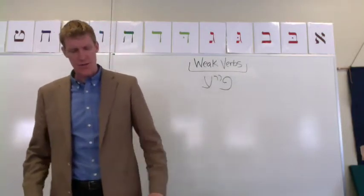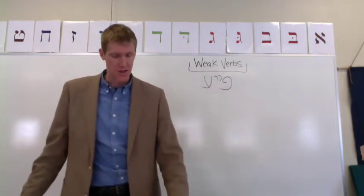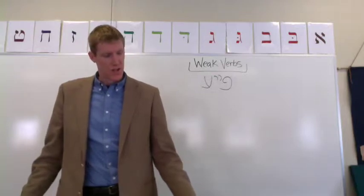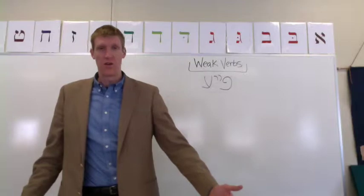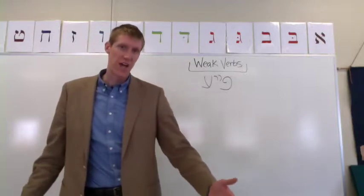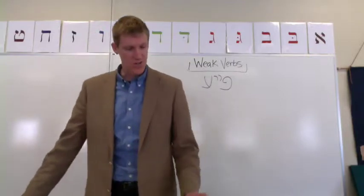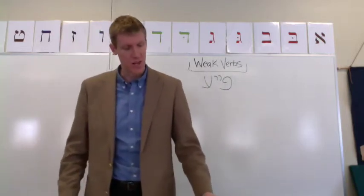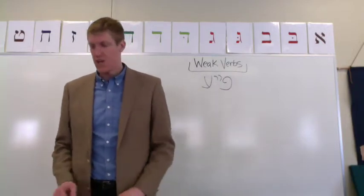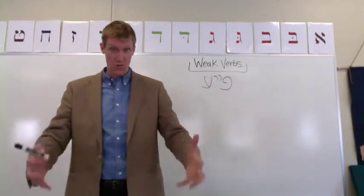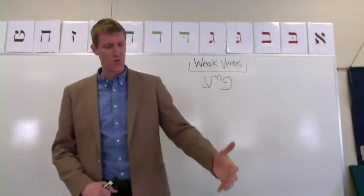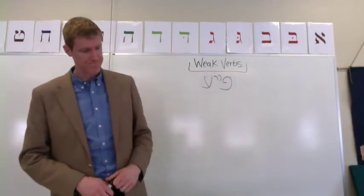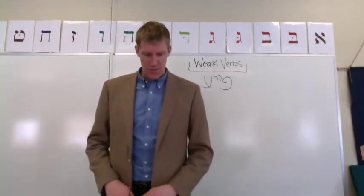I'll walk through some of the paradigms. This section could be extremely overwhelming because the textbook gives you paradigms for one Pe-Ayin verb in every single stem — for perfect, imperfect, imperative, infinitive construct, infinitive absolute, and participles. So it might look overwhelming visually. I'll try to walk you through a few things and identify what you want to pay attention to as you look through the chapter.